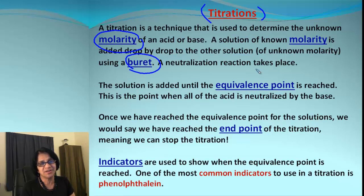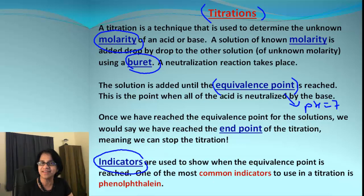We reach a point called the equivalence point. At this point, pH equals seven. When the reaction reaches equivalence point, we can stop the titration, and we call that the endpoint. How do we know to stop? We add indicators. Indicators indicate that the reaction is complete by a color change. One example is phenolphthalein. This is the setup for a titration experiment.